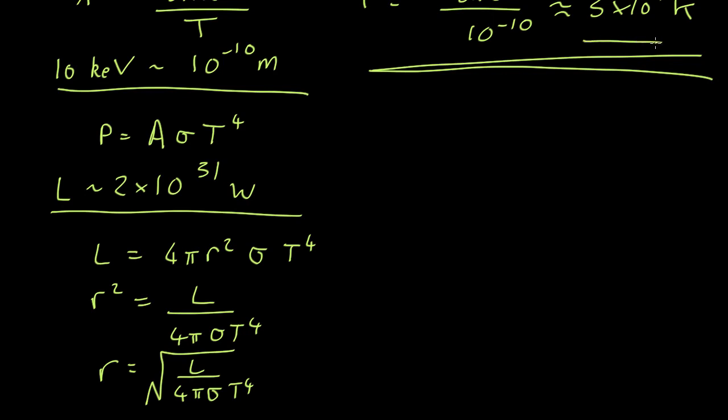And if we plug in the temperature, 30 million degrees, Stefan-Boltzmann constant, 5.67 by 10 to the minus 8, and the luminosity, 2 by 10 to the 31, that comes out as roughly 6 kilometers.